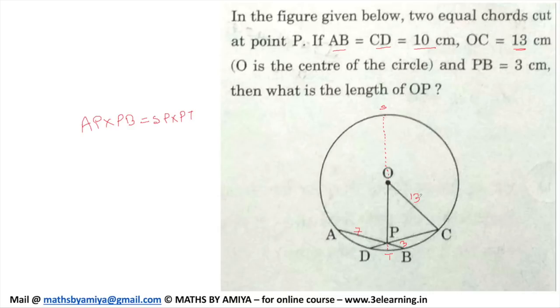Total radius is 13 centimeters. Say OP is X. So this OS is 13 by the radius and PT is nothing but 13 minus X. How comes? Because OT is the radius in which OP is nothing but X.